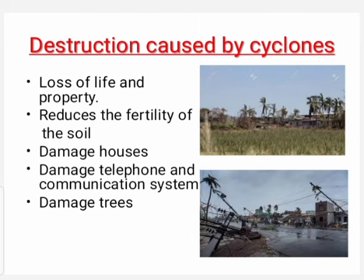Cyclones can be very destructive. The water waves produced by the wind are so powerful that sea water enters low-lying coastal areas, causing severe loss of life and property. Cyclones also reduce the fertility of the soil. High-speed winds can damage houses, telephone lines, and other communication systems, as well as trees.